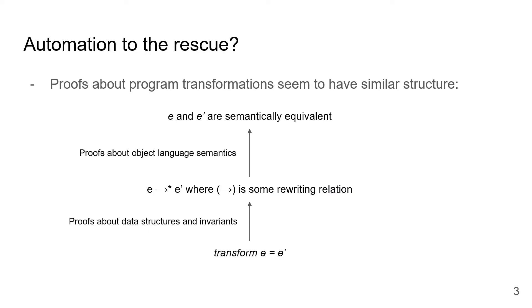So, it's natural to wonder whether automation can help make it easier to write these kinds of verified program transformations. While building CertiCoq, we noticed that a lot of proofs about program transformations seem to have the same two-layered structure. First, a functional program implementing the transformation is proved sound with respect to some relational specification, usually given in the form of syntactic rewrite rules.